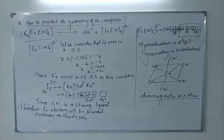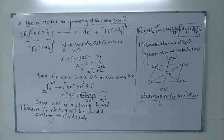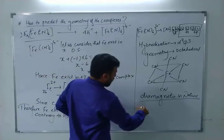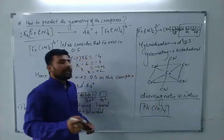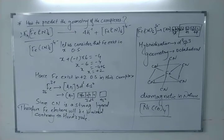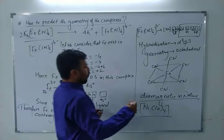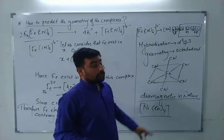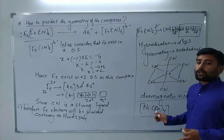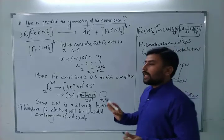Now let me give you another compound. Can you predict the geometry of Ni(CO)4? This is a complex. Remember that CO is a strong ligand and nickel can exist in zero oxidation state, giving the configuration 3d⁸ 4s². Using the same procedure, you fill the orbitals accordingly to predict the geometry.